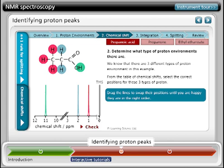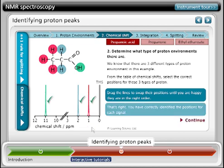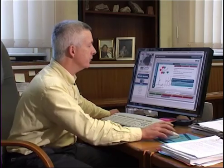These are just approximate chemical shifts, but they give me a relative idea of where the protons will appear. Let's check that answer. That's good. We've correctly identified the positions of each signal. So we can now move on to the next tutorial.